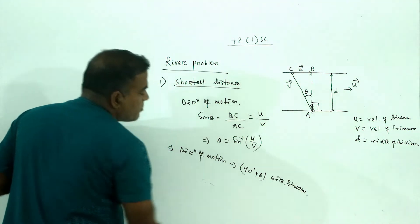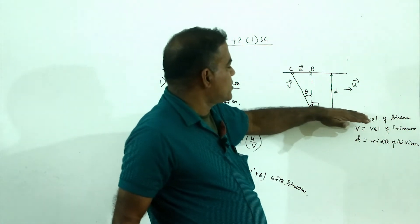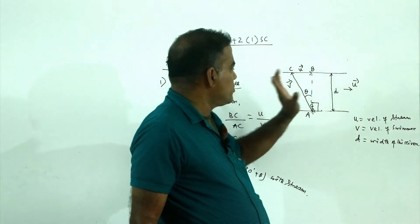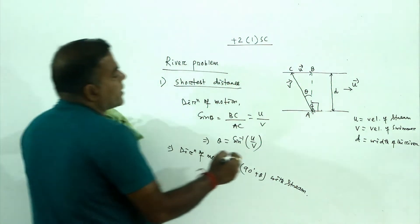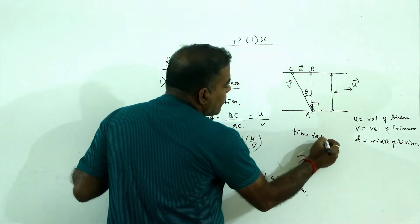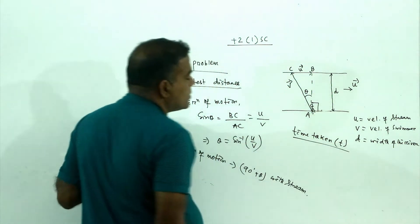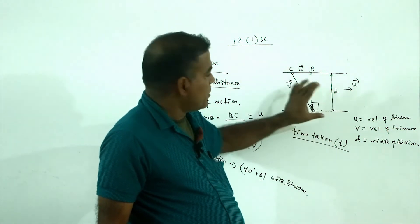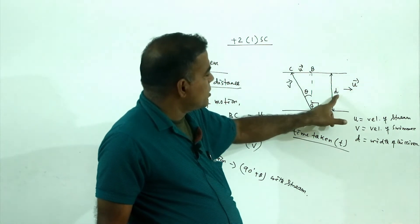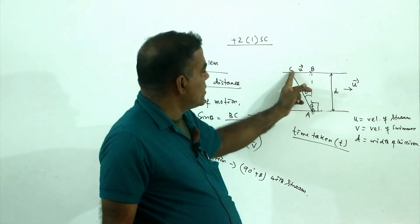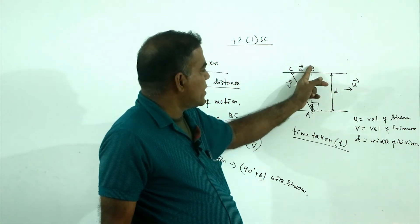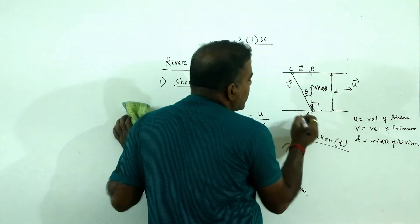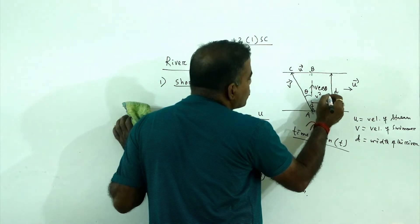90 plus theta with the stream means 90 degrees plus theta from the stream direction. The time taken is the width d divided by the effective velocity in the crossing direction. By the right-angle triangle principle, the velocity component across the river is the square root of v squared minus u squared.